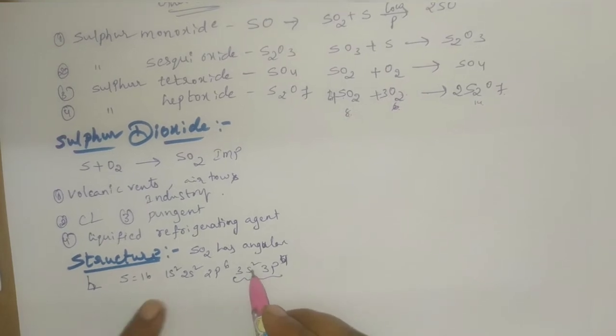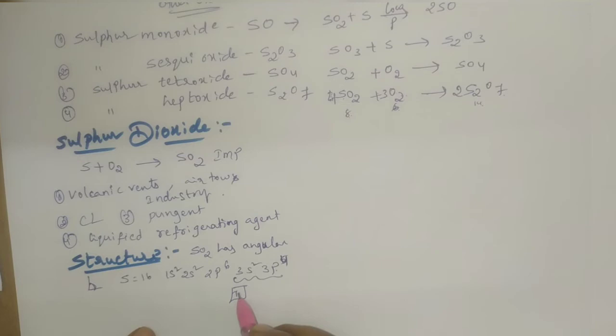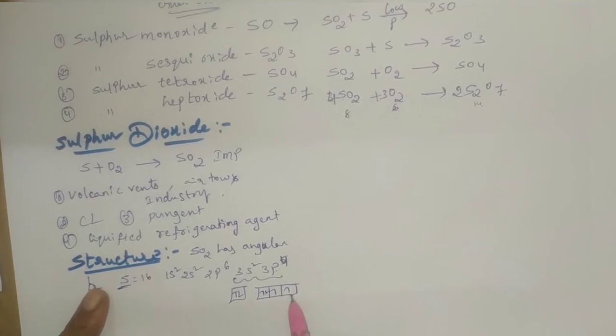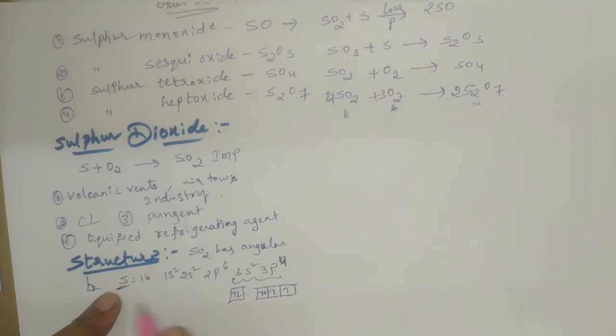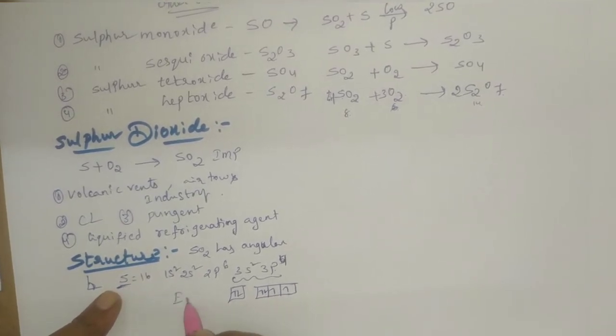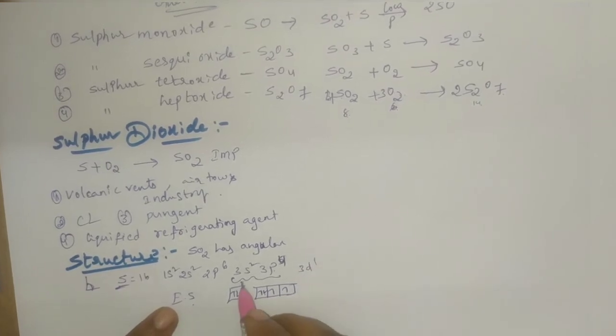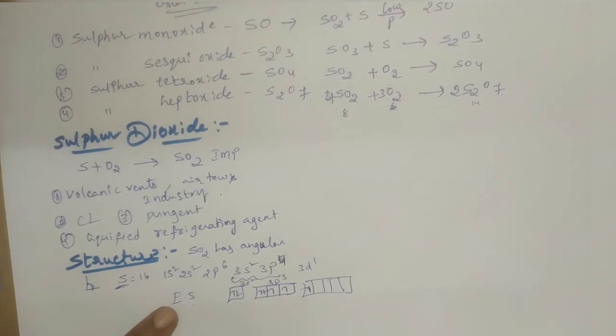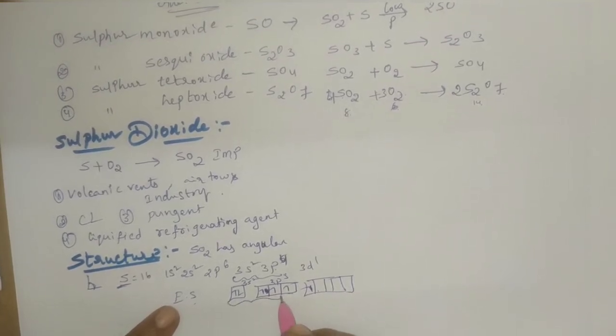In the first excited state, one electron jumps into another orbital. Sulfur has a minimum two bonds capability, but sulfur dioxide requires satisfying two oxygens, meaning it needs four bonds to form. That's why sulfur goes to excited state - one electron jumps to the next level, 3d1. So we have 3s2, 3p3, and one electron moves from p to d orbital, leaving only three electrons for sp2 hybridization.